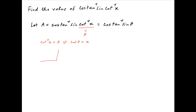Now consider a right angle triangle where the angle between the base and the hypotenuse is theta. Since cot theta is equal to x, therefore the base is x and the perpendicular is 1. So from Pythagoras theorem, the hypotenuse is square root of 1 plus x squared. Therefore sin theta is equal to the perpendicular upon the hypotenuse, which is 1 upon square root of 1 plus x squared.